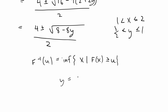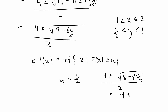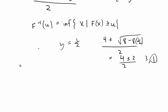Using the infimum definition, I plug in y equal to 1/2 as a test: the formula gives 4 plus or minus the square root of 8 minus 8 times 1/2, divided by 2. That yields 4 plus or minus 2 divided by 2, which gives either 3 or 1. Since both are valid solutions, I pick the one giving the smaller value for the infimum, which means I choose the minus sign. So the unique solution for the second part is 4 minus the square root of 8 minus 8y, divided by 2.